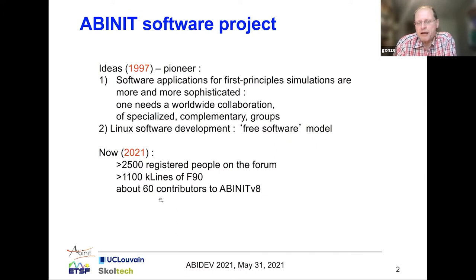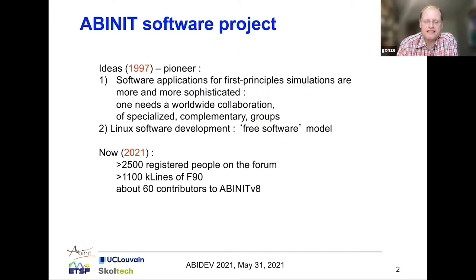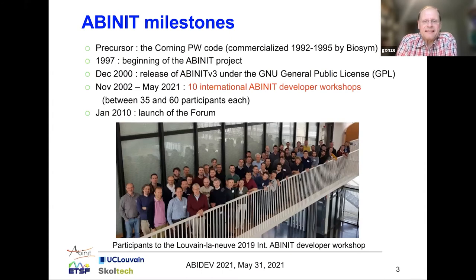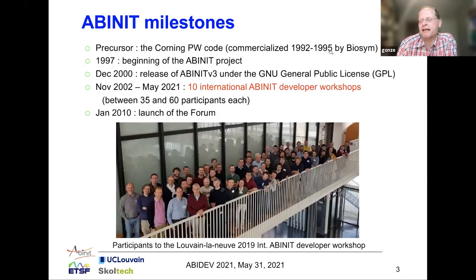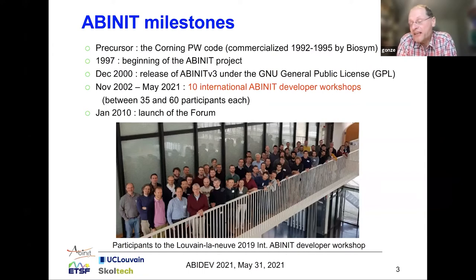To give a sense of the size of the developer community, there have been about 60 contributors to Abinit version 8. Many contributors only contributed small additions, but there is nevertheless a large number of people who have gone inside the Abinit sources. There was actually a precursor to Abinit — there are still lines from the Corning plane wave code inside the current Abinit, because this code was commercialized between 1992 and 1995 by Ossim, but it was not a great success.